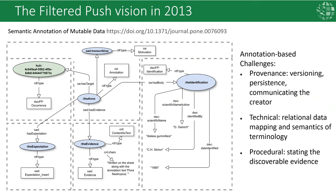The late Bob Morris led us in participating in the W3C annotations group to consider data annotation. This led to the concept shown in this diagram, where in addition to the body and the target, we introduced the concepts of evidence and expectation. However, this data extension was not included in the web annotation standard. The challenges for data annotation were, under provenance: versioning, persistence, and communicating the creator; technically: relational data mapping and semantics of terminology; and procedurally stating the discoverable evidence.